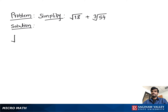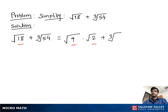Simplify square root of 18 plus cube root of 54. First, simplify square root of 18: write it as square root of 9 times square root of 2. Then write cube root of 54 as cube root of 27 times cube root of 2. Square root of 9 becomes 3.